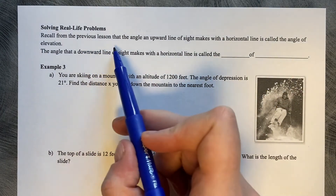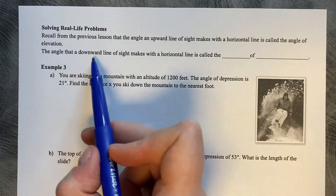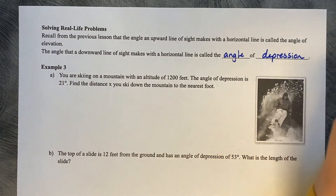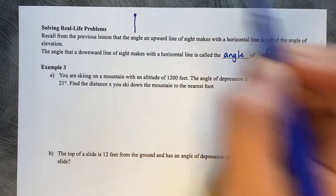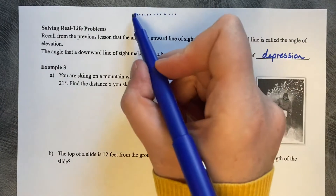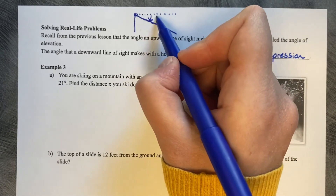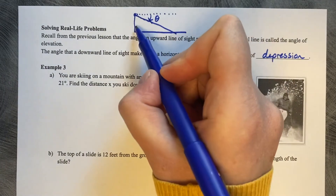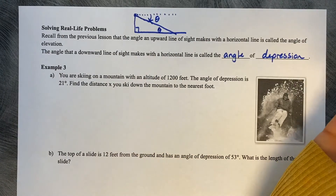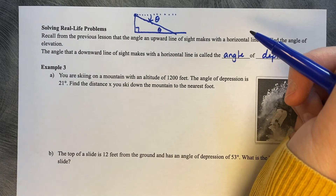Solving real-life problems. The angle an upward line of sight makes with a horizontal line is called the angle of elevation. The angle that a downward line of sight makes with a horizontal line is called the angle of depression. If you're standing at a height and looking down, that angle is your theta — but using alternate interior angles, you can move that angle down to the angle of elevation position in your drawing.